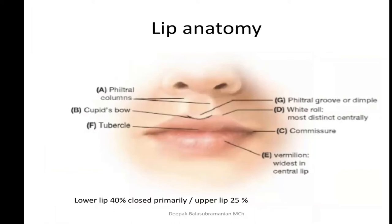The lip has several distinct landmarks. In the upper lip: the philtral columns, philtral groove, white roll most distinct in the central area, cupid's bow, and the tubercle. The lower lip is generally featureless with a wide vermilion widest in the central lip. Regarding distensibility: up to 40% of lower lip defects can be closed primarily, and up to 25% of upper lip defects can be closed primarily, though some literature argues it is 25% for both lips.